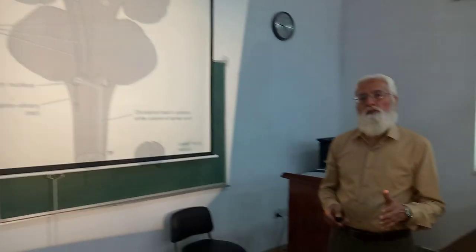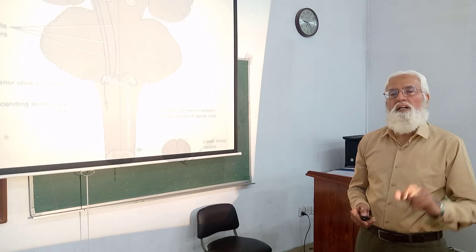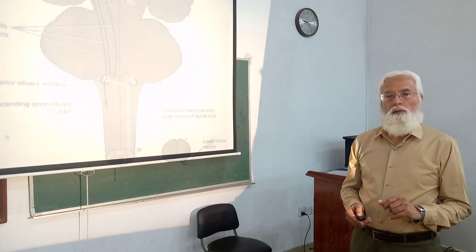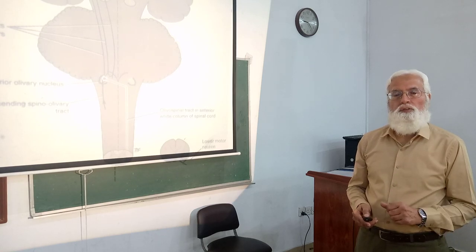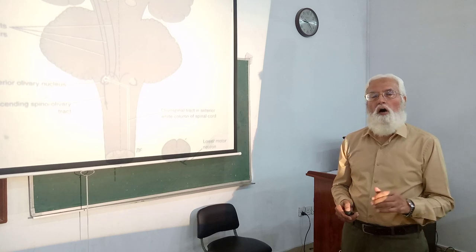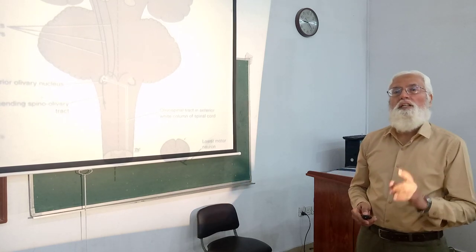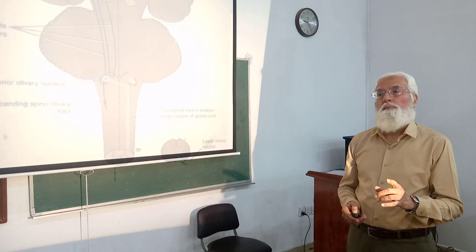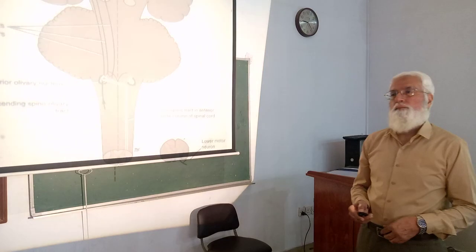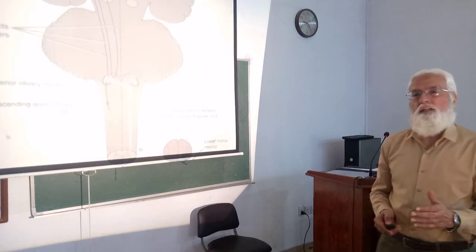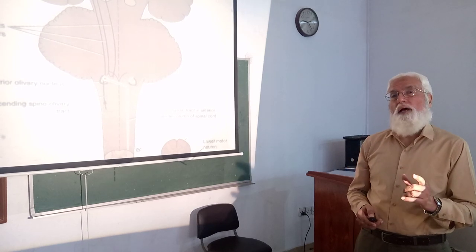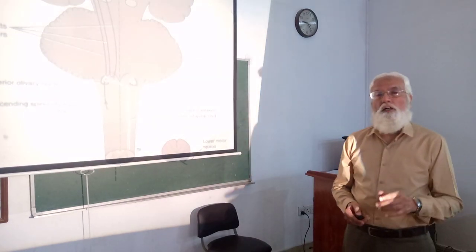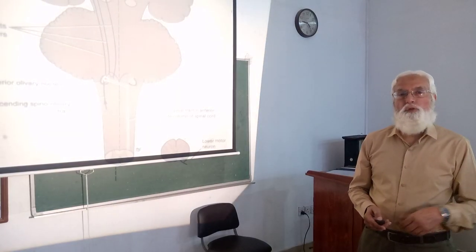The descending autonomic pathways originate from higher centers in the cerebral cortex, amygdala, hypothalamus, and reticular formation. These fibers cross over to the opposite side and join the reticulospinal tract to descend into the spinal cord.